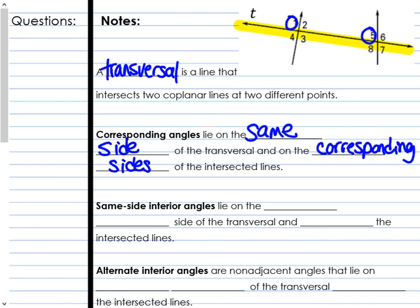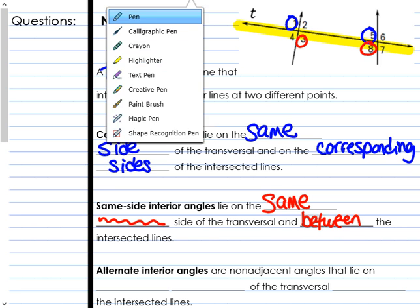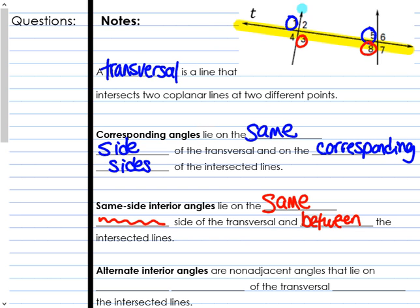Next up, we have same side interior angles, and they lie on the same side of the transversal and between the intersected lines. For example, three and eight are same side interior. They're on the same side of the transversal — they're both below the transversal — and they're between those intersected lines. Three and eight are between them.